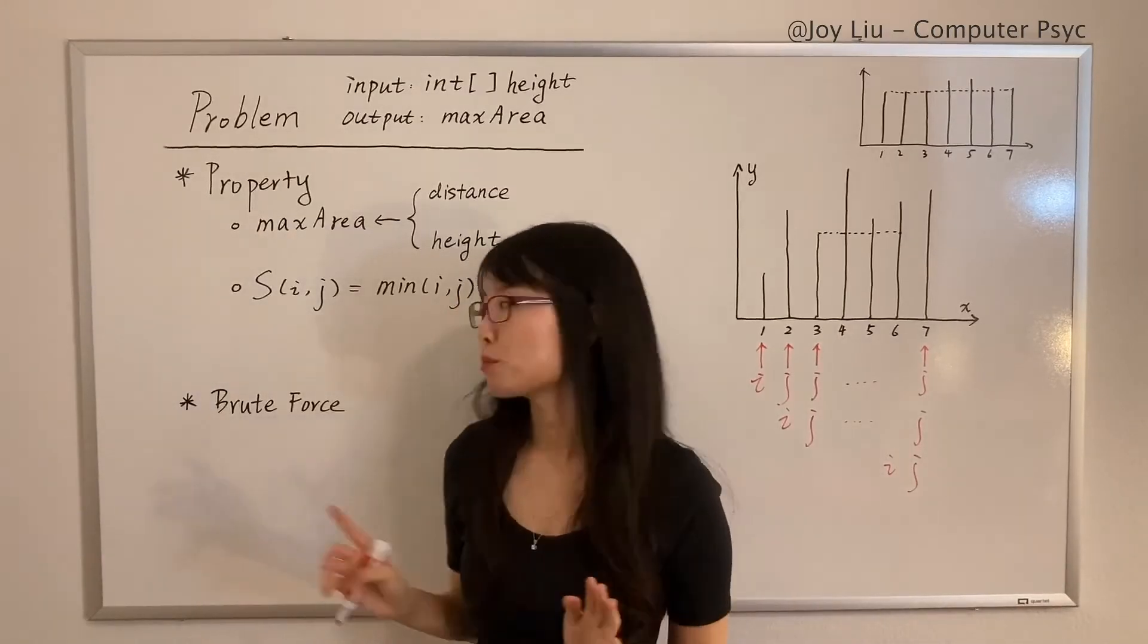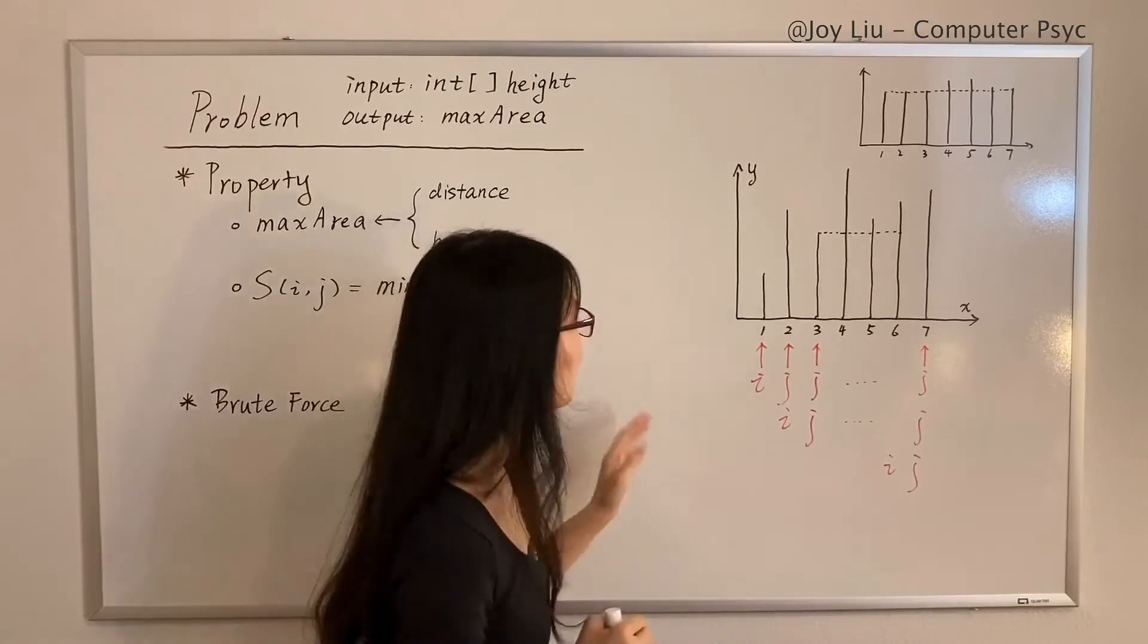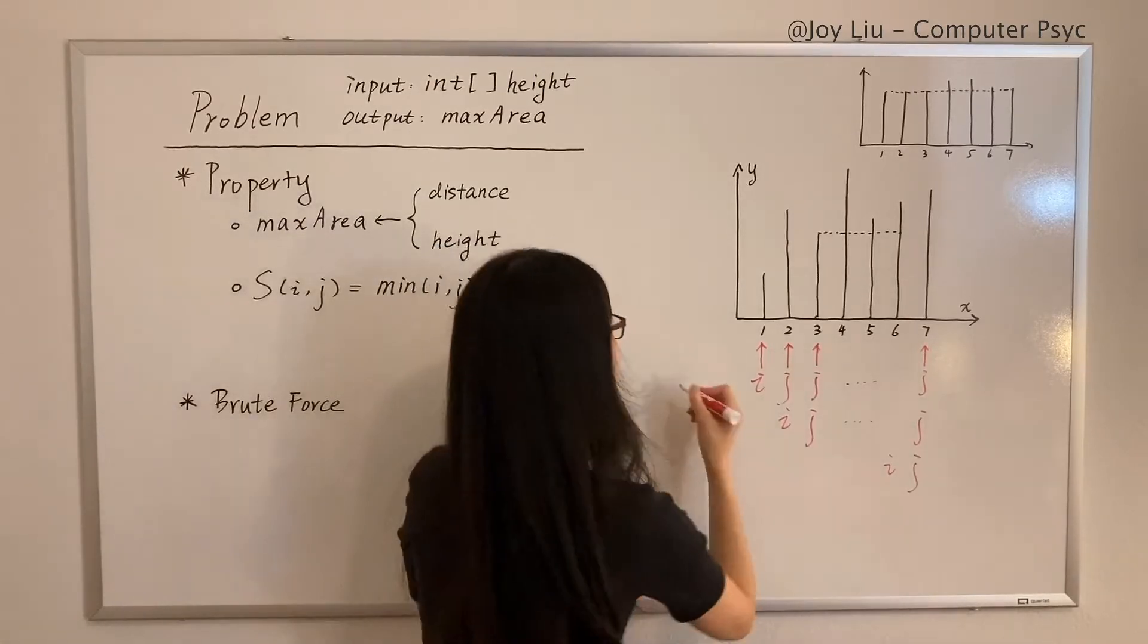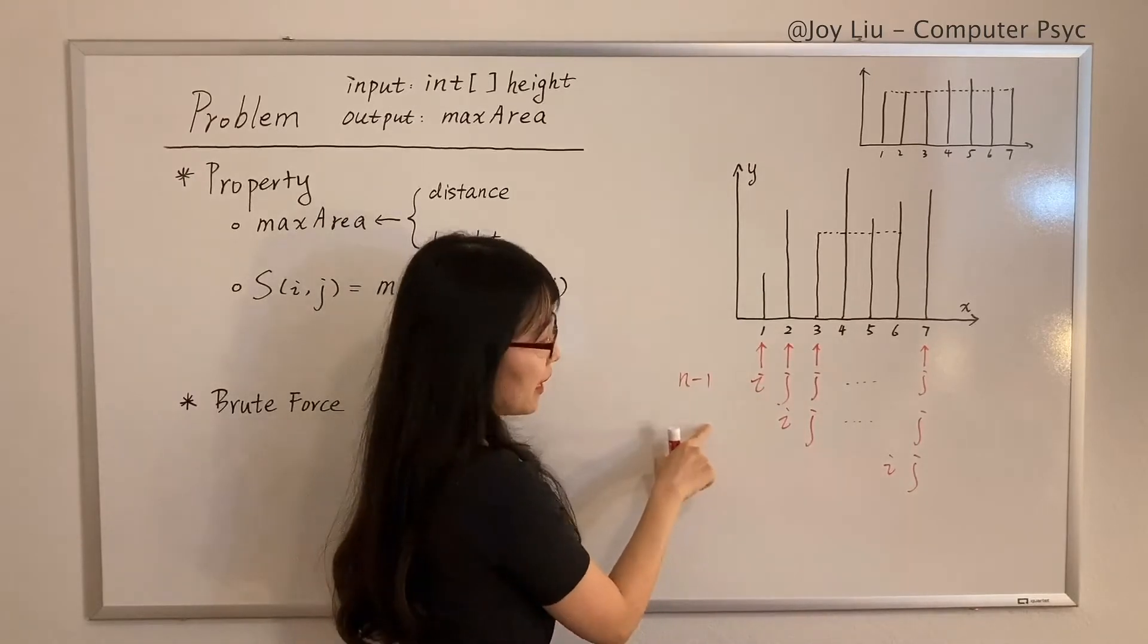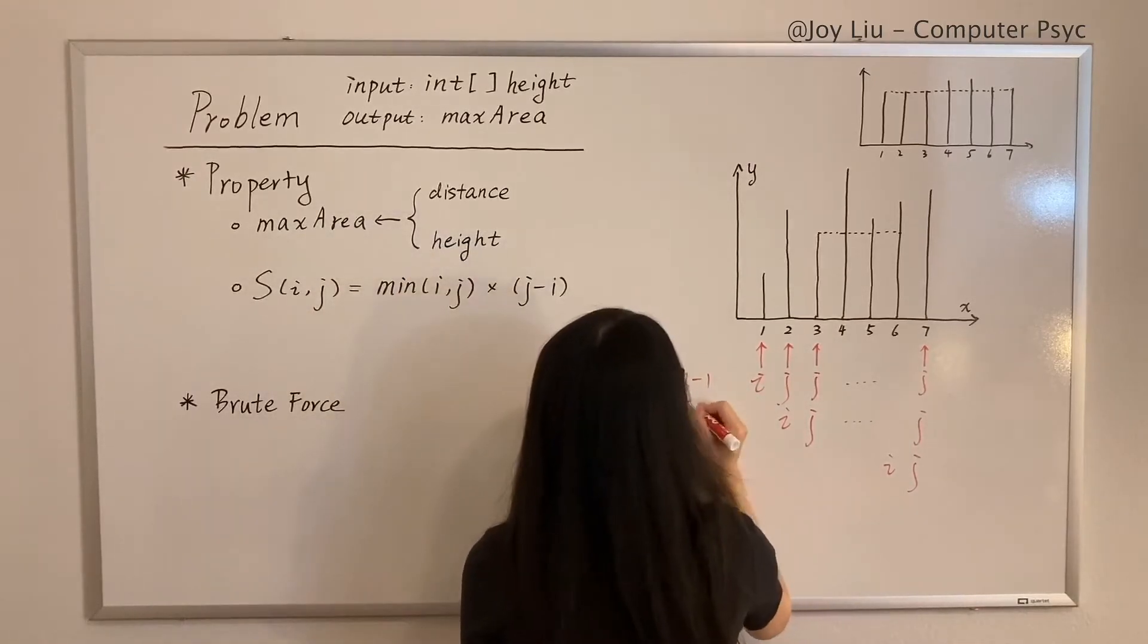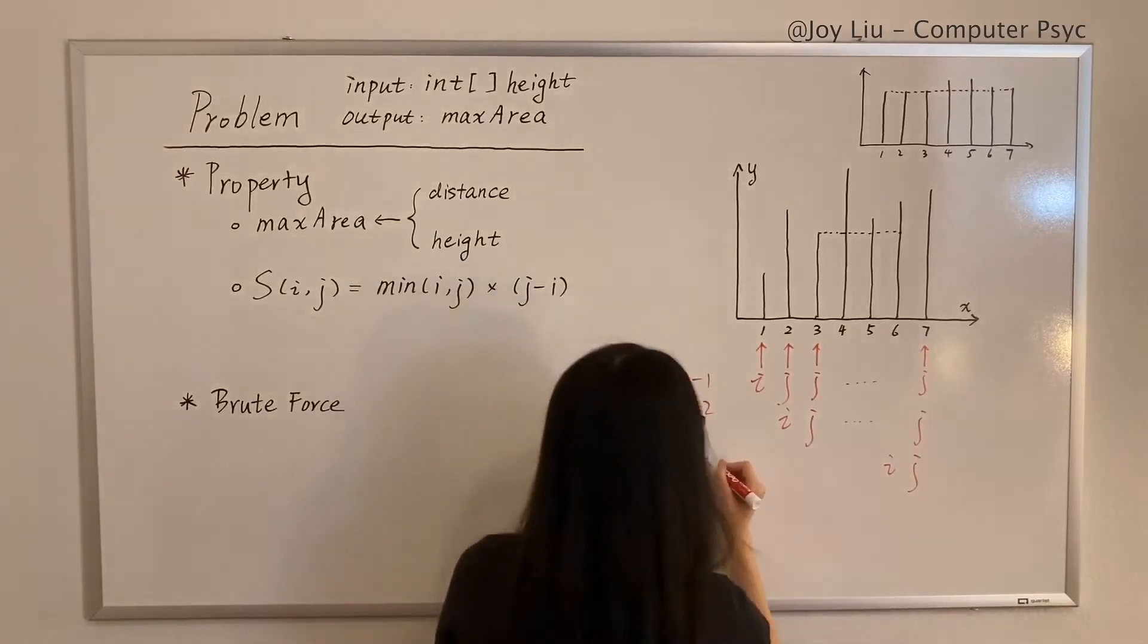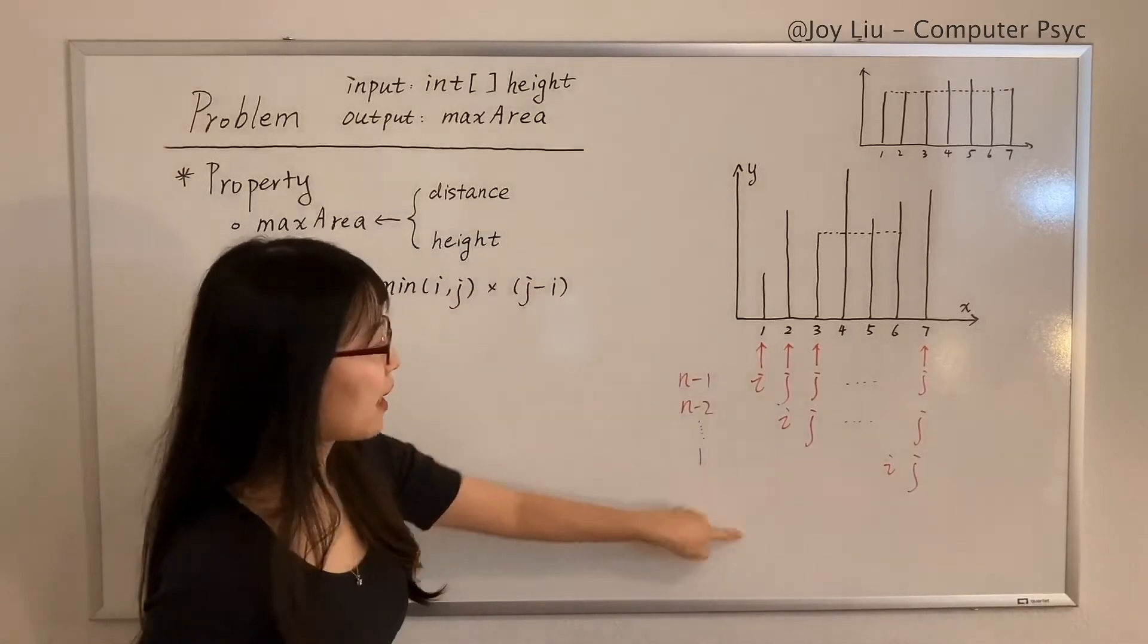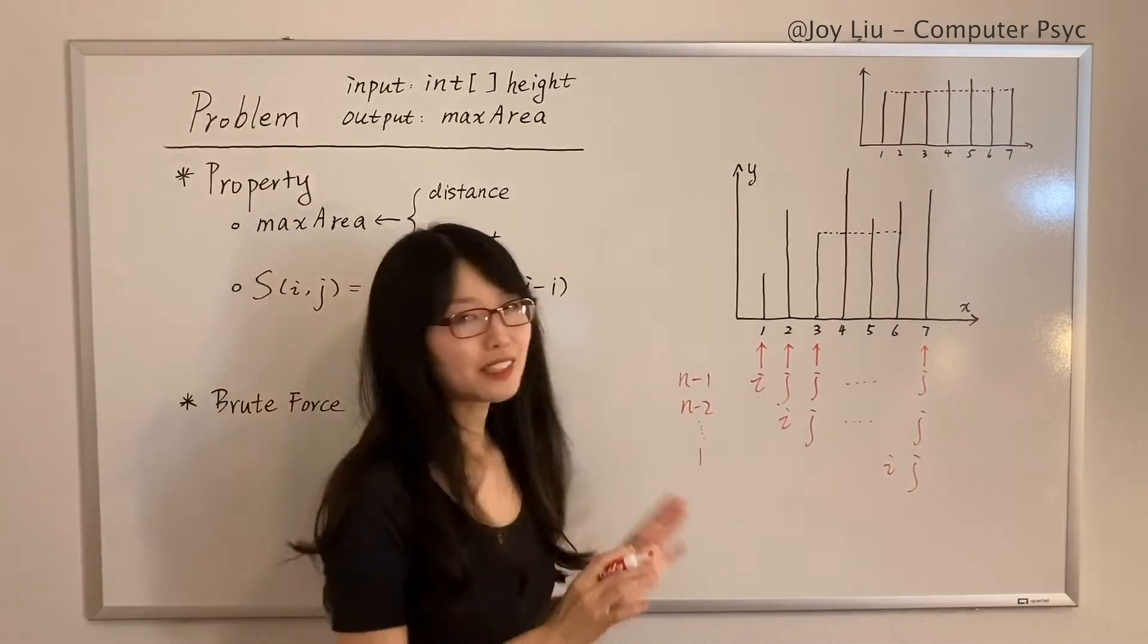So what is the time cost for the brute force solution? It's O(n²). The first iteration requires n - 1 moves, and the second iteration requires n - 2.